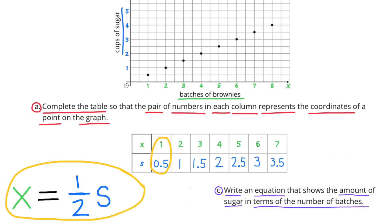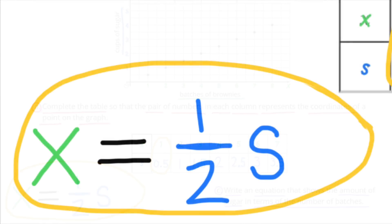C. Write an equation that shows the amount of sugar in terms of the number of batches, with X representing the batches of brownies and S representing the cups of sugar. The equation would be S equals one half X.